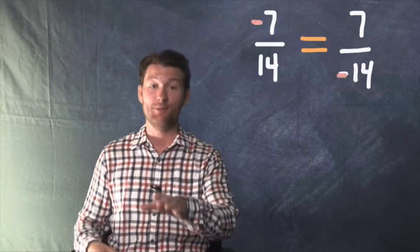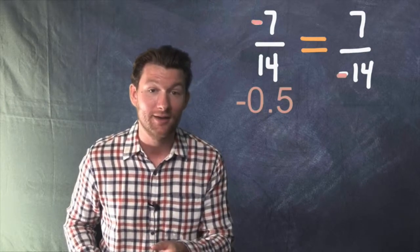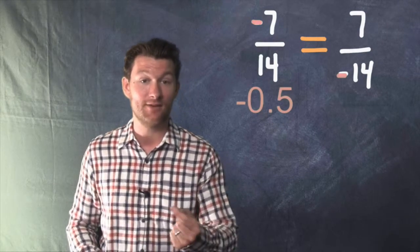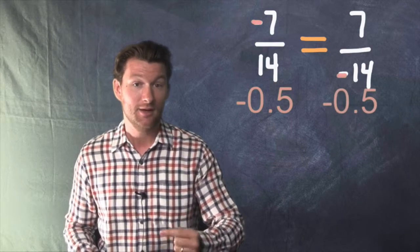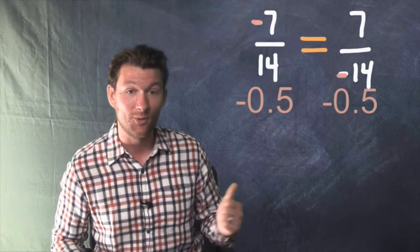And I'll prove it to you. You take out a calculator and you put in negative 7 divided by 14, you're going to get negative 0.5. You use that same calculator to do 7 divided by negative 14, you're going to get negative 0.5. Because it doesn't matter if the negative sign is on the top or the bottom.